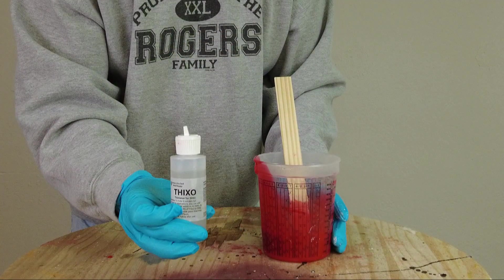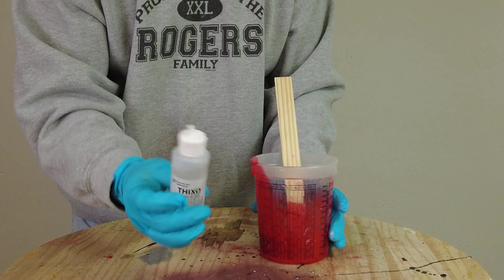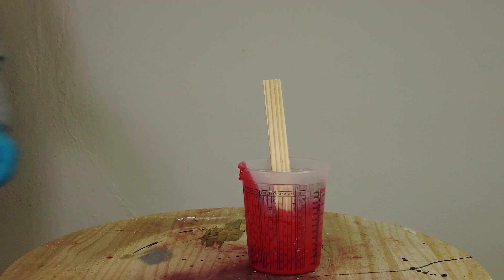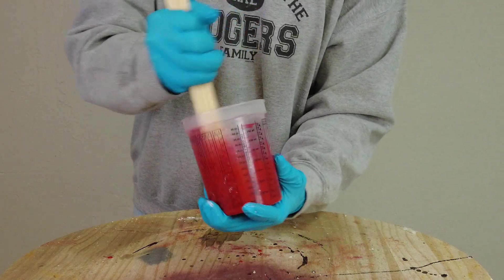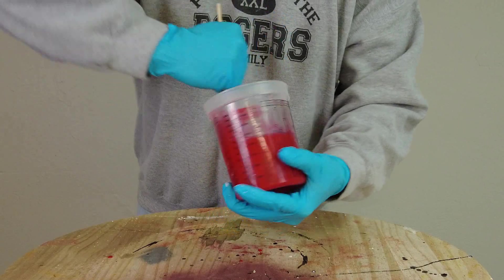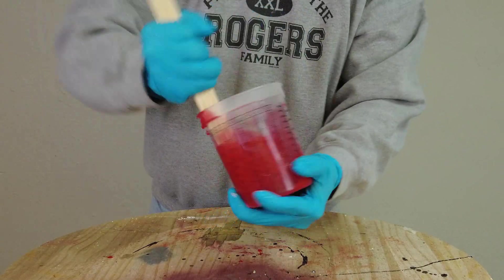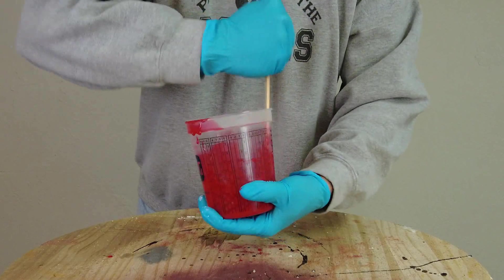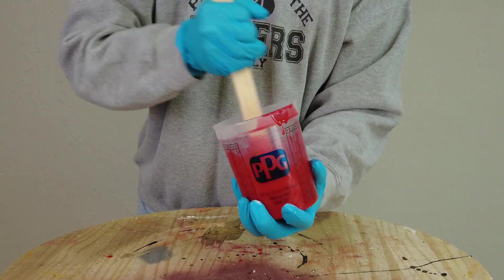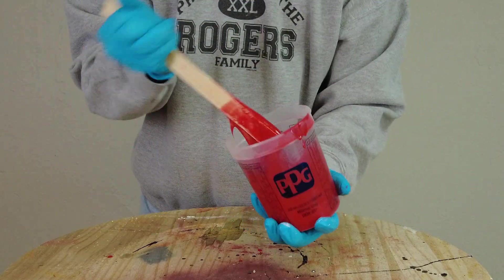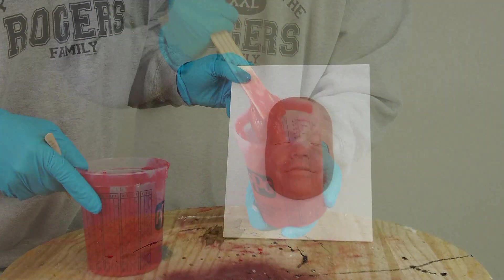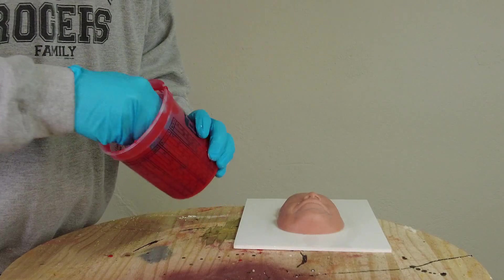Now we're going to set those aside and add our Thixo. Real important on Thixo: there are a lot of different thixotropic additives, and this particular one is one we have tested with this silicone. Always make sure when you're using a thixotropic additive like this that you've tested it or you've seen it used in our videos and make sure it's appropriate for that formula. There are some thickeners that may contaminate some formulas, so always be aware of that and always do a test if you haven't seen it used that way before. The thickener reacts pretty quick—it'll immediately start converting that over to a paste—and now we're ready to paint it onto our pattern.